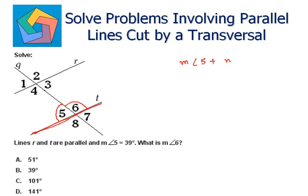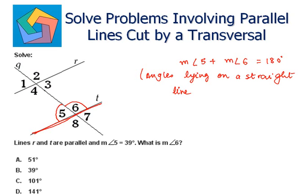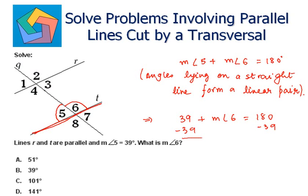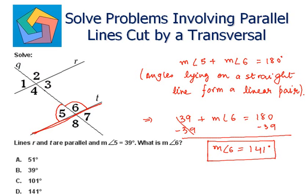Therefore, we can say the measure of angle 5 plus the measure of angle 6 is 180 degrees. Angles lying on a straight line form a linear pair. This implies 39 plus the measure of angle 6 is equal to 180, subtracting 39 from both sides. So we can say the measure of angle 6 is equal to 180 minus 39, which is 141 degrees, which is the answer in part D.